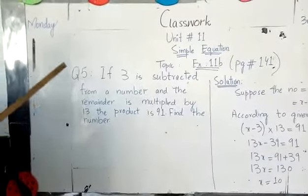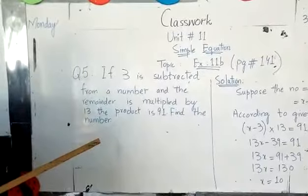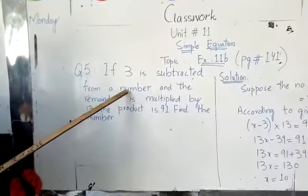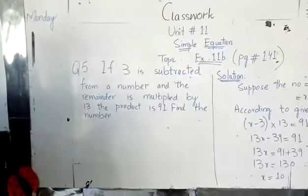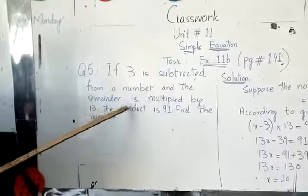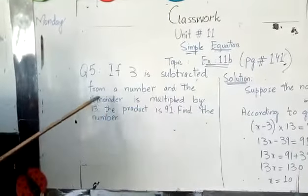Let's understand the statement of our question. If 3 is subtracted from a number - if we minus 3 from one number, subtract means minus - and the remainder is multiplied by 13.